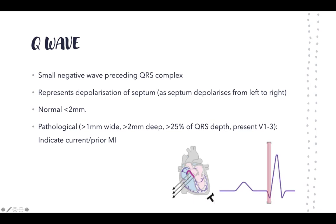Since this movement is perpendicular to lead two — which is generally the lead shown when displaying one waveform — it produces a negative deflection first, as the signal is moving away from the monitor. So it gives a negative deflection. Usually this Q wave should only be less than two millimeters.